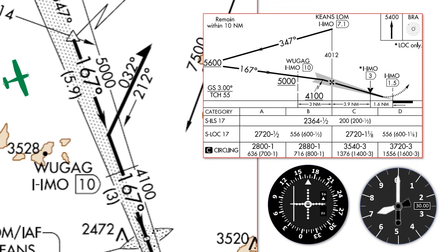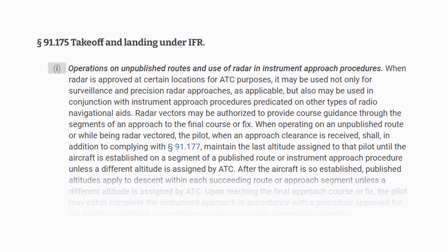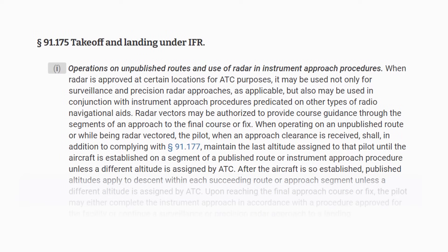However, our timing is controlled by 91.175, which states in part that when operating on an unpublished route like we are, we need to maintain the last altitude assigned until established on a segment of the published approach. So we stay at 7,000 until established. But what does it mean to be established on an approach?